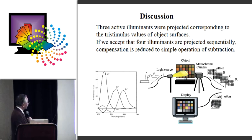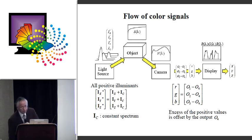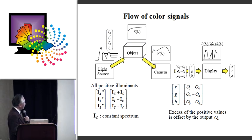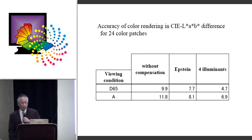We project the modified sub-illuminant onto the object, and also the constant spectrum is also projected onto the object. In the flow of the signal, at the camera side, the excess of the positive value is offset by subtracting the output corresponding to the constant illuminant.